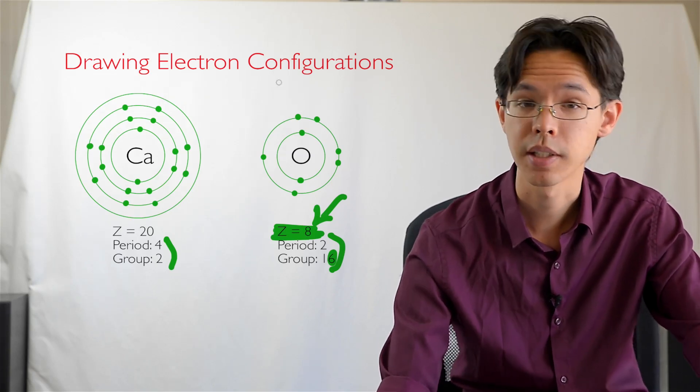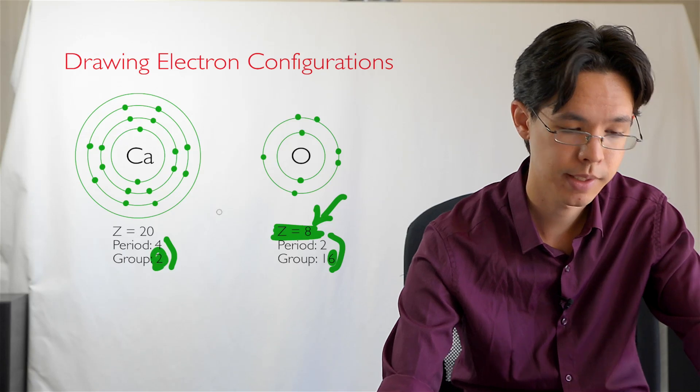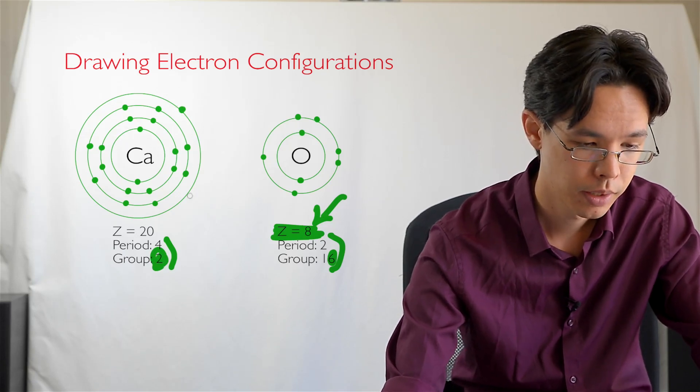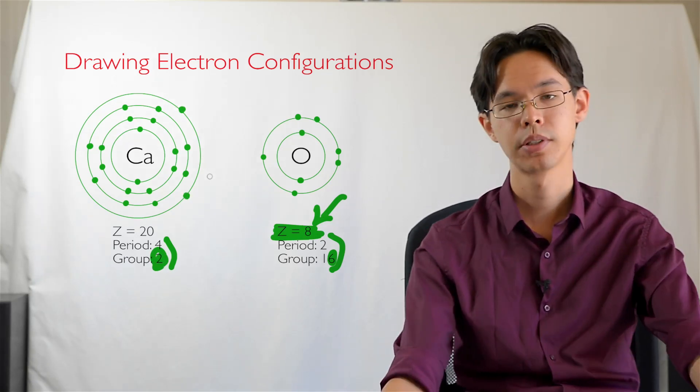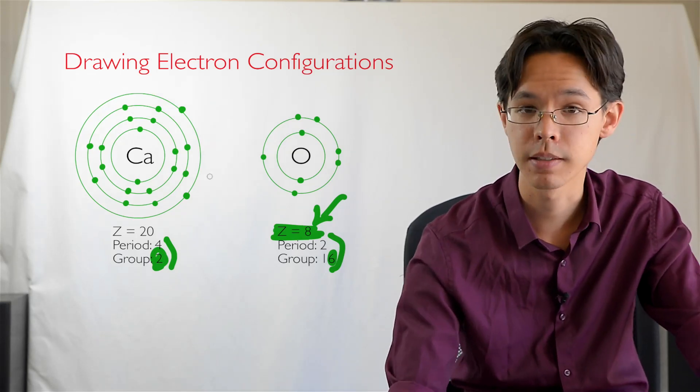And the outermost shell, the valence shell, says that it must have two electrons because that's the group number. So here we go. One, two. Two electrons in its outermost shell.